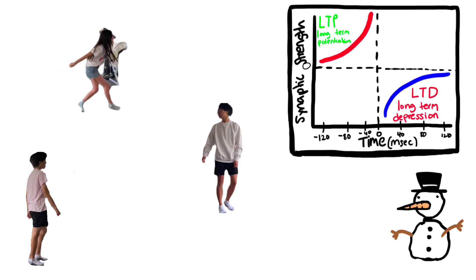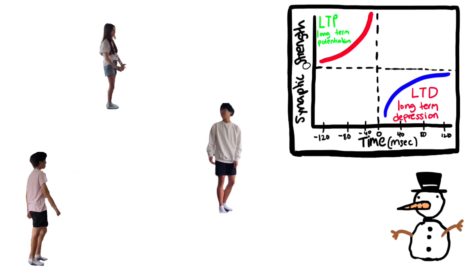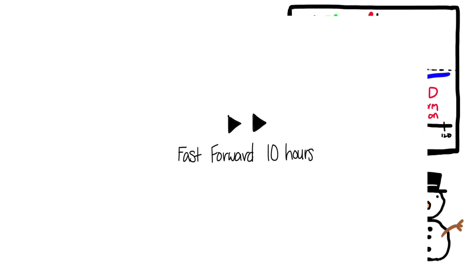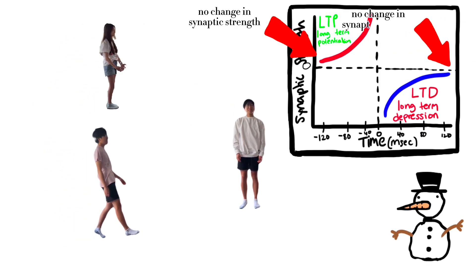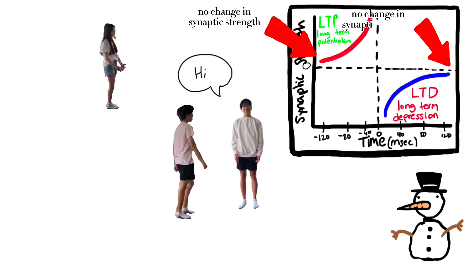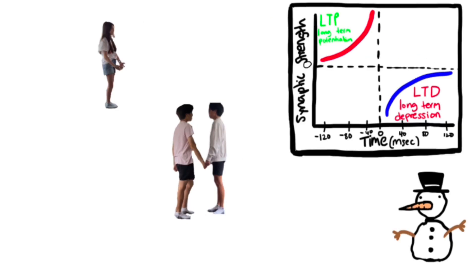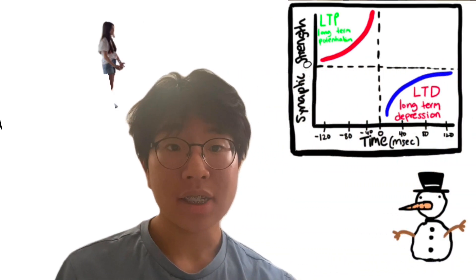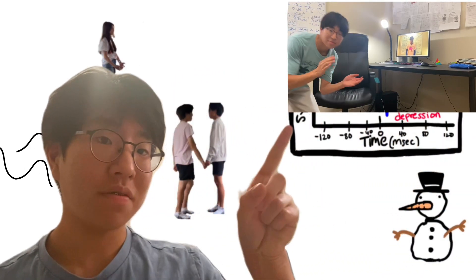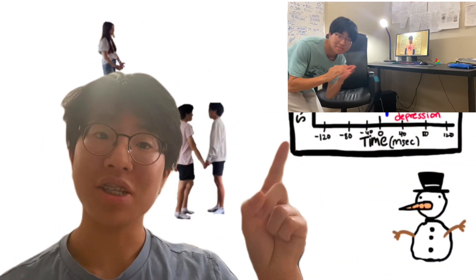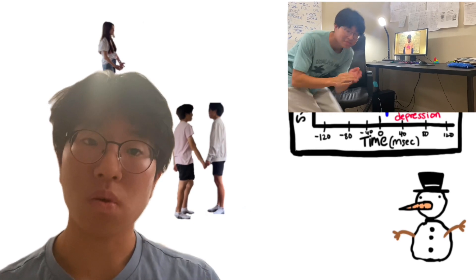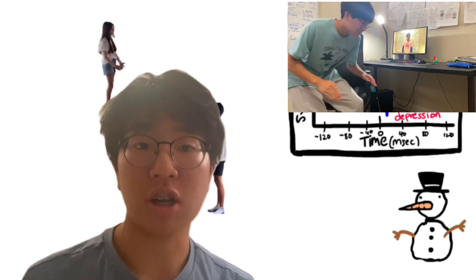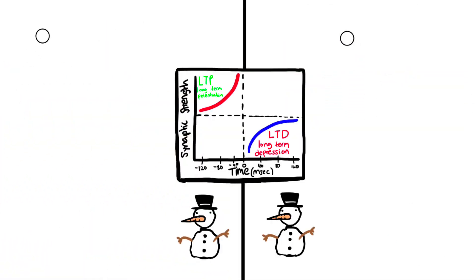If Emily throws a snowball at Posty long before or after Preston grabs Posty's attention, there will be no conflict between Preston and Posty because of the large time interval. Think of it like this: that sound was from the start of the video, but super delayed, so your brain would not have correlated the clapping sound with that clip due to the large time interval.